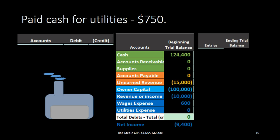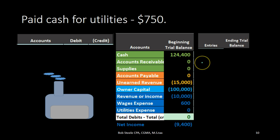In this lecture we're going to record the transaction of paying the utility bill with cash. We're going to record the journal entry on the left hand side and then post it in shorthand fashion to the trial balance — assets in green, liabilities in orange, owner's equity in light blue, and the darker blue being the income statement.